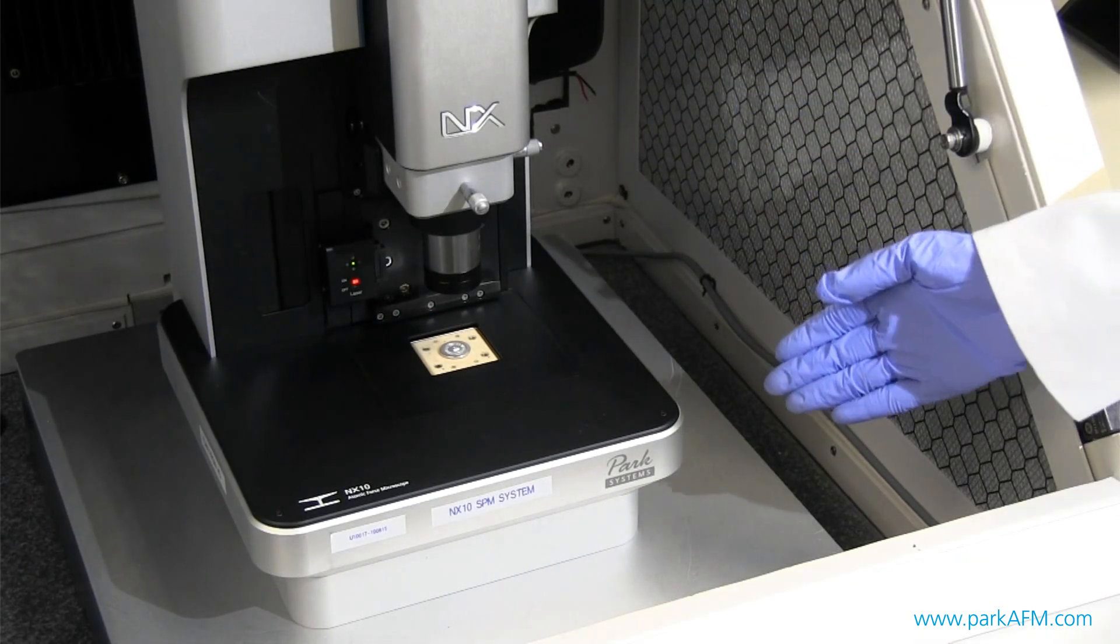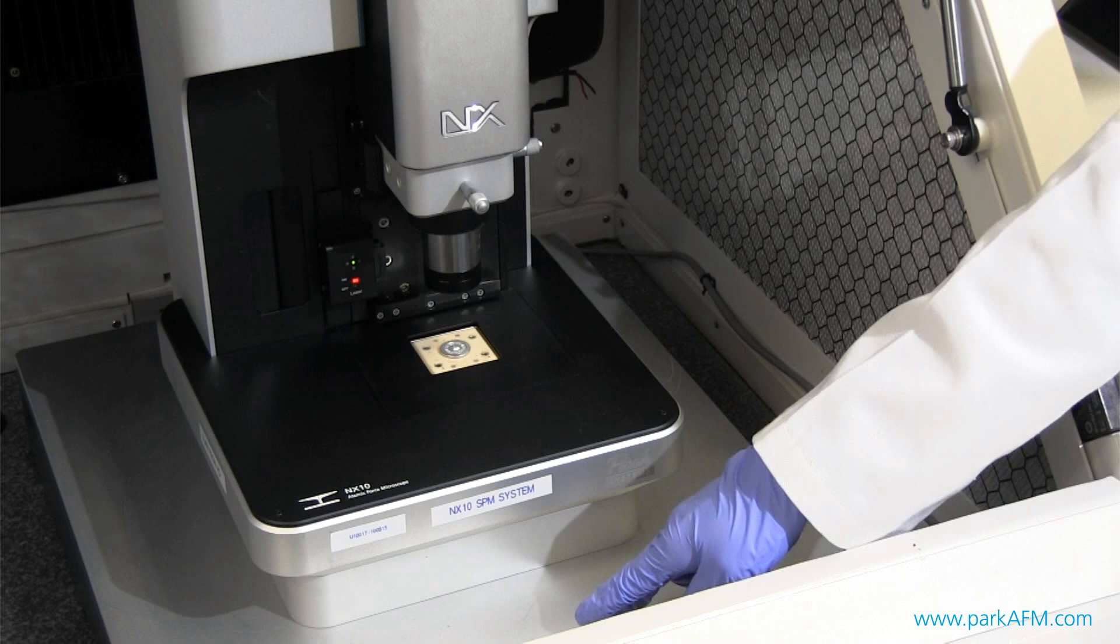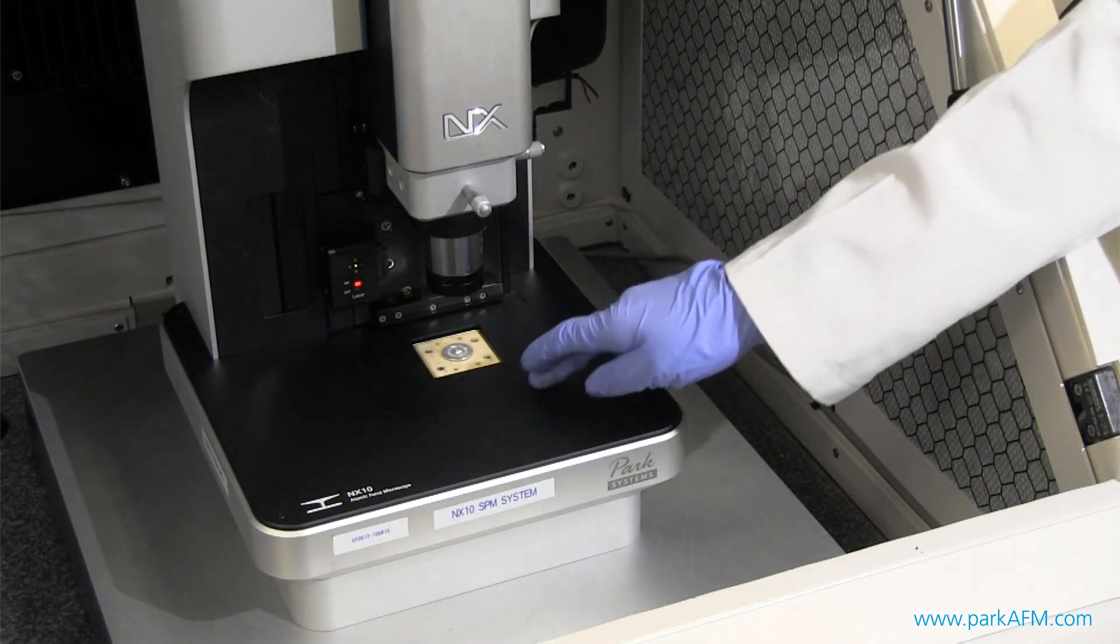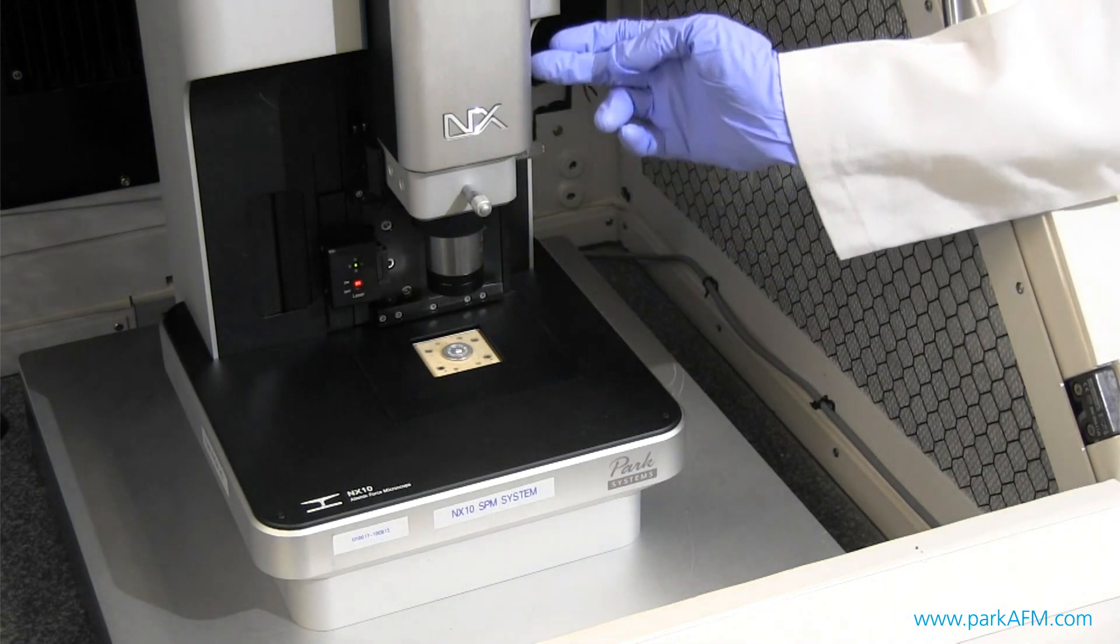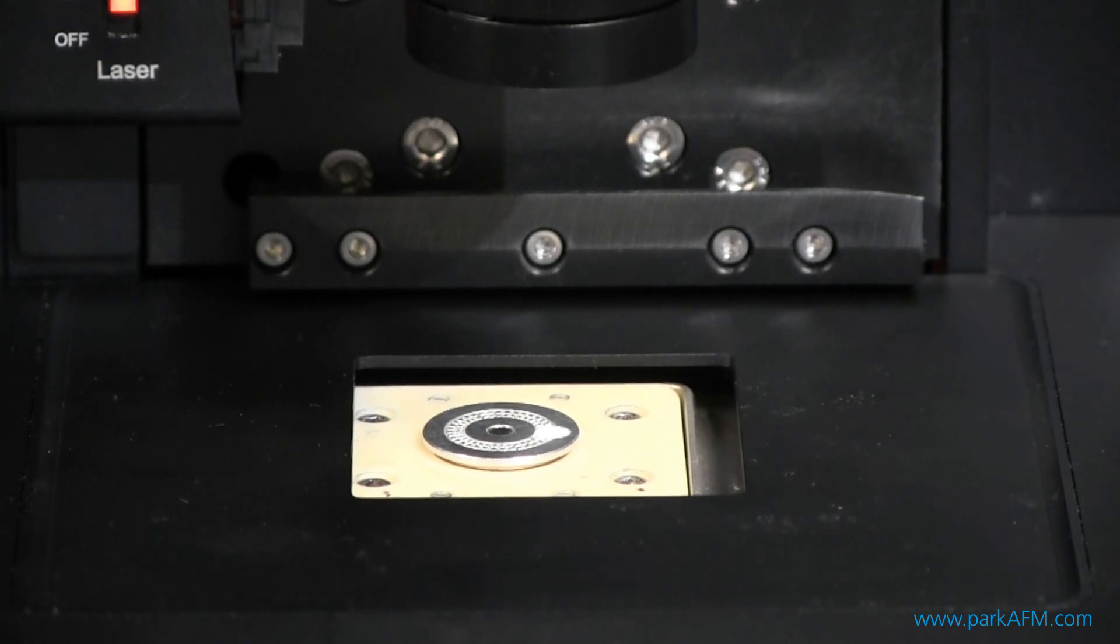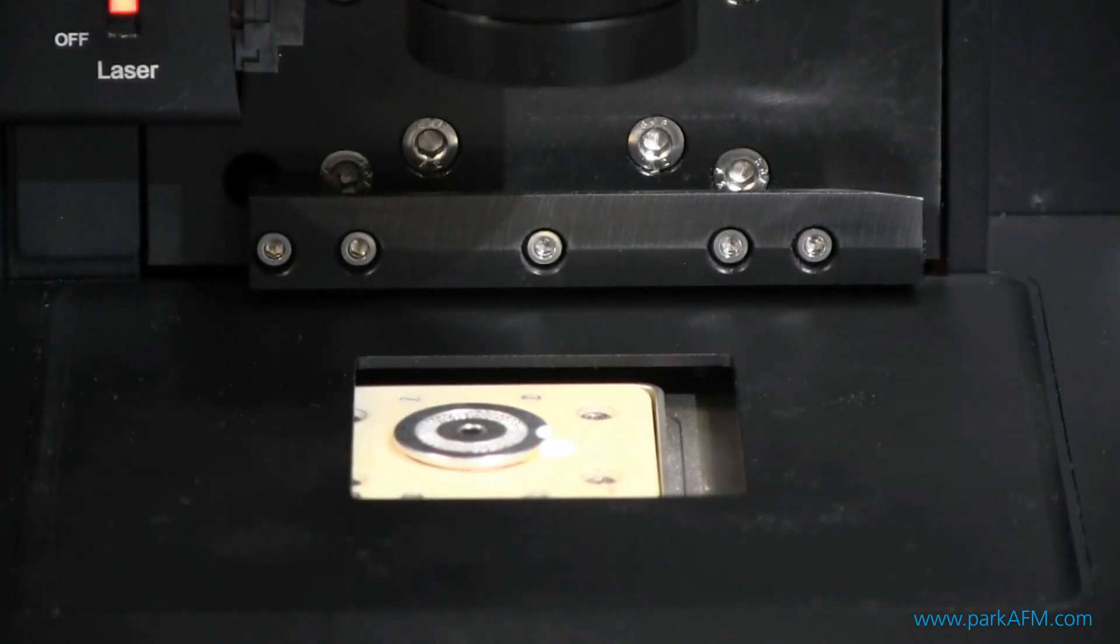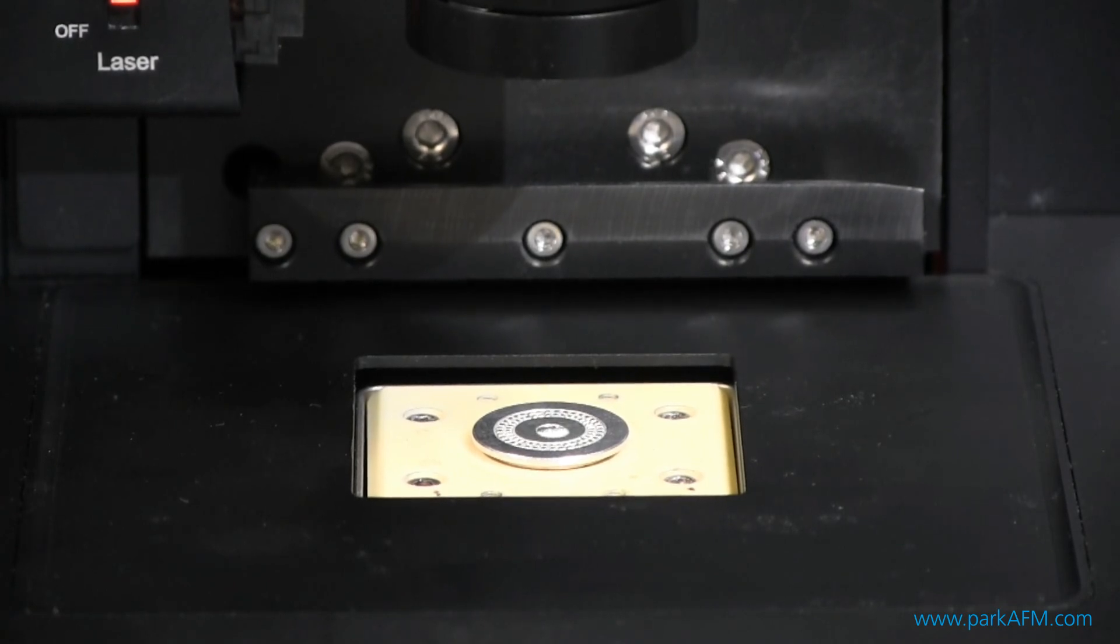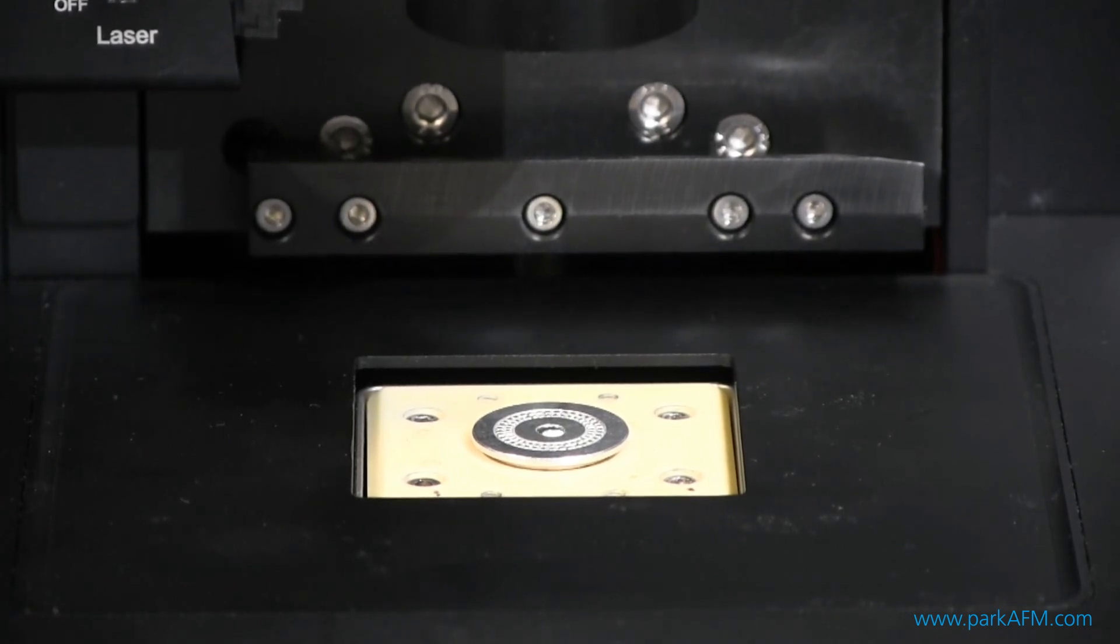So here is the body of the system. Down here is the active vibration isolation table, and here is the XY sample stage decoupled from the Z stage. Since both the XY scanner and Z head are motorized, moving them is as simple as making a few mouse clicks in the system's control software.